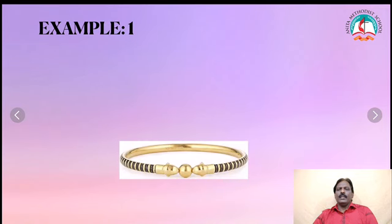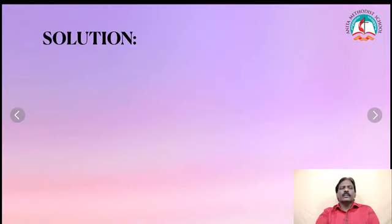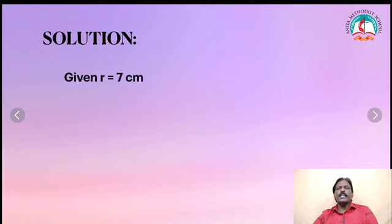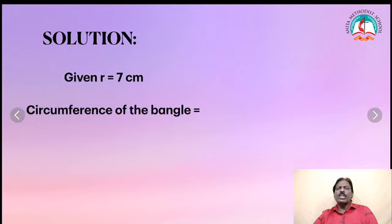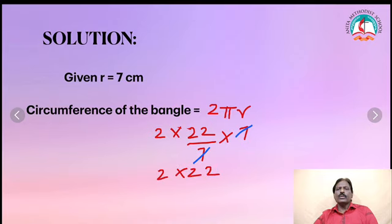Now see Example 1. Calculate the circumference of the bangle with radius equal to 7cm. Solution: given r, radius is equal to 7cm. Therefore, circumference of the bangle is equal to 2πr. That is 2 into 22 by 7 into 7. You can cancel 7 and 7, so it is equal to 2 into 22, which equals 44cm.